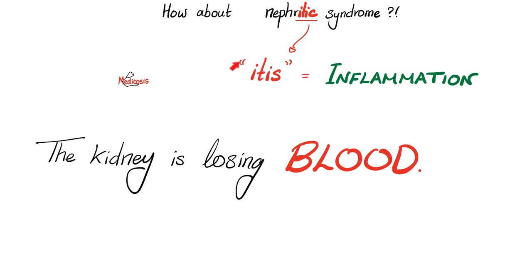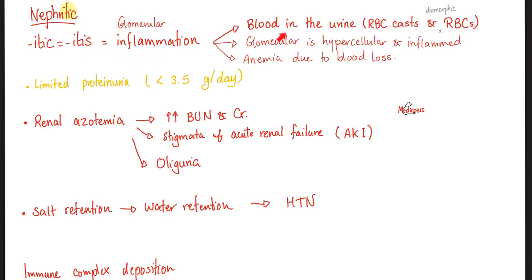If you understand the lingo, you should never confuse nephritic with nephrotic. The name has the answer — itis means inflammation. Your glomeruli are bleeding; it's nephritic. You see blood in the urine with red blood cells, red blood cell casts, and dysmorphic red blood cells. Dysmorphic red blood cells usually come from the glomeruli; red blood cell casts usually come from the tubules. Both are kidney problems — do not blame the bladder, ureter, or urethra. Glomeruli are hypercellular and inflamed under the microscope. Limited proteinuria: less than 3.5 grams per day.